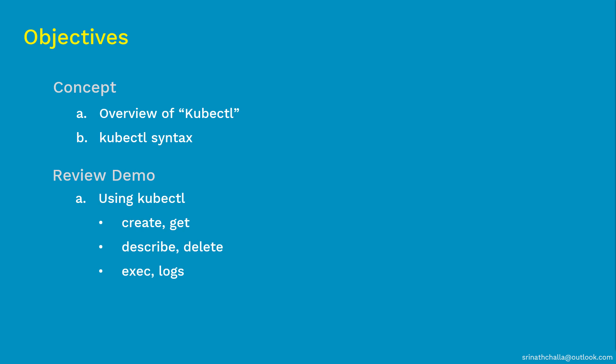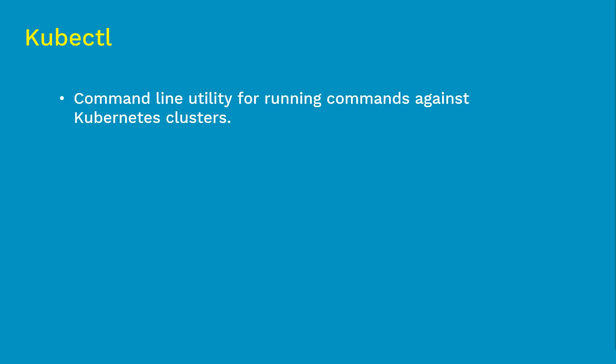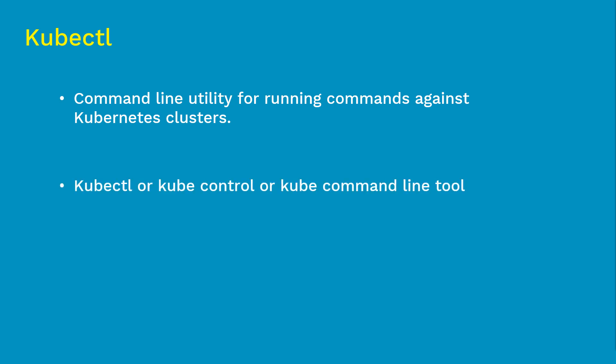So now let's get started with what is kubectl. It is a command line interface for running commands against the Kubernetes cluster. We use the kubectl command for creating, updating, displaying, and even deleting any Kubernetes objects inside Kubernetes. All kubectl commands start with 'kubectl', as we'll see shortly. kubectl is also called 'kube control', 'kube cuddle', or 'kube cuttle' — all are one and the same.